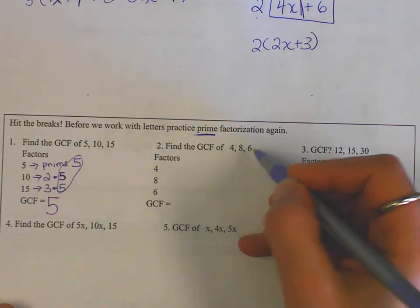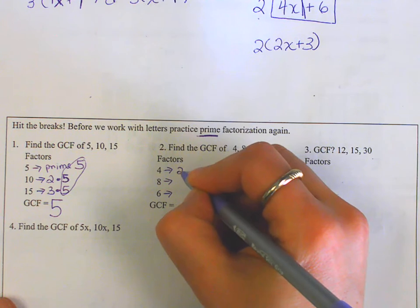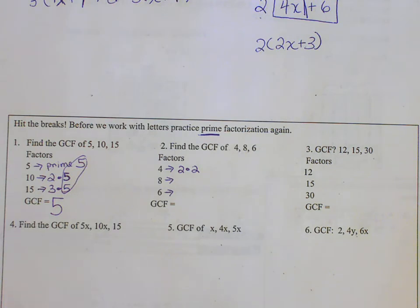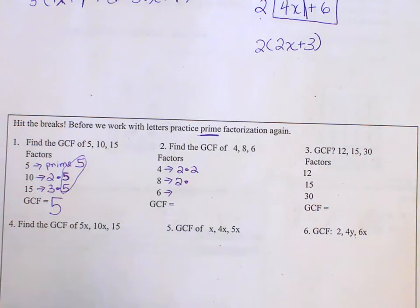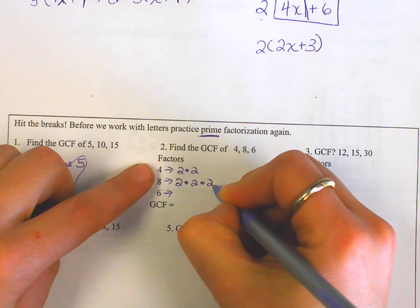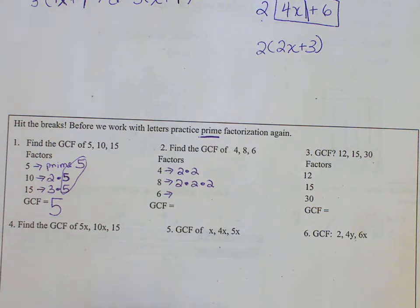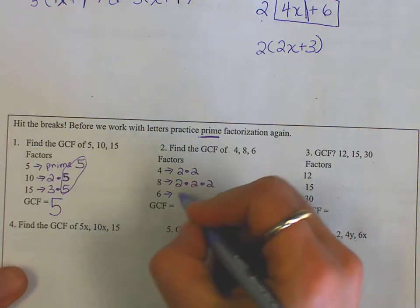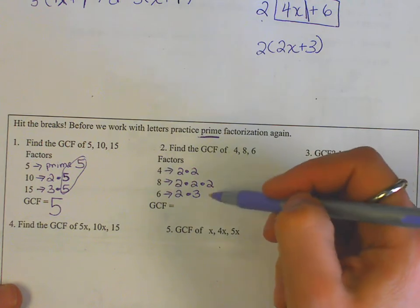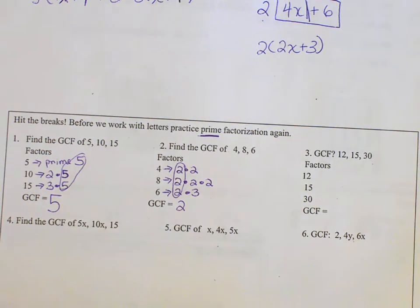Let's find the GCF of 4, 8, and 6 using prime factorization. The prime factors of 4 are 2 times 2. For 8, if you say 4 times 2, the 4 is not prime so we break it down further: 8 is 2 times 2 times 2, or 2 cubed. Six is 2 times 3. Looking at all three lists, what do I see in every one? I circle the 2 — so the GCF is 2.